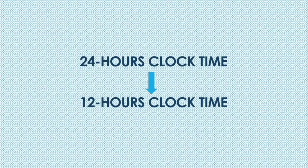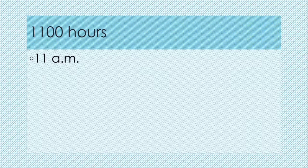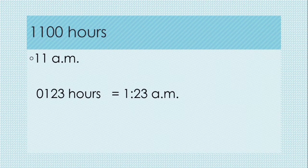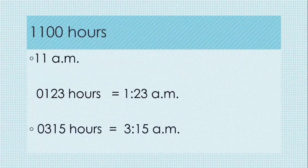Now, convert 24 hour clock time into 12 hours clock time. The first example is 1100 hours — that means 11 AM, because the time is not more than 1200 hours, so that means it is the time before noon. 0123 hours is 1:23 AM — it is also before noon. And 0315 hours is 3:15 AM.